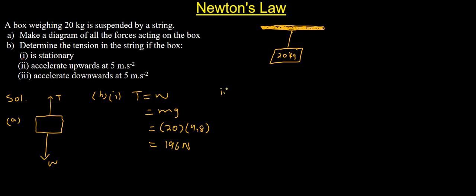Then answer number two, Roman figure number 2: determine the tension in the string if the box accelerates upward at 5 meters per second squared. We know that when we have acceleration we have a resultant force, given by mass multiplied by acceleration. Let's take upwards as positive, because direction is very important.